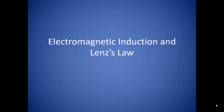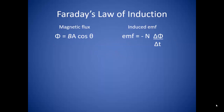Electromagnetic induction is the creation of an electric current in a wire by changing the magnetic field around that wire. Faraday's law of induction describes how the EMF is changed with a changing magnetic flux. Magnetic flux is the product of the strength of the magnetic field times the area, times the cosine of the angle between the magnetic field and the area. The induced EMF is the negative number of turns times the change in magnetic flux over the change in time.